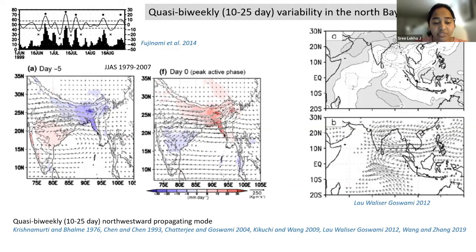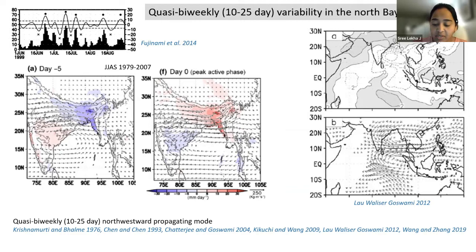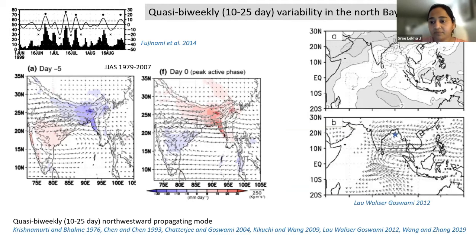There have been many studies showing the presence of this 10 to 25 day time scale variability in rainfall, outgoing longwave radiation, winds, moisture flux, and so on. But the question we ask is: do we see this time scale in ocean variables as well? To answer that question, I'll be using mooring observations from the 18 degrees North Bay of Bengal mooring observatory.